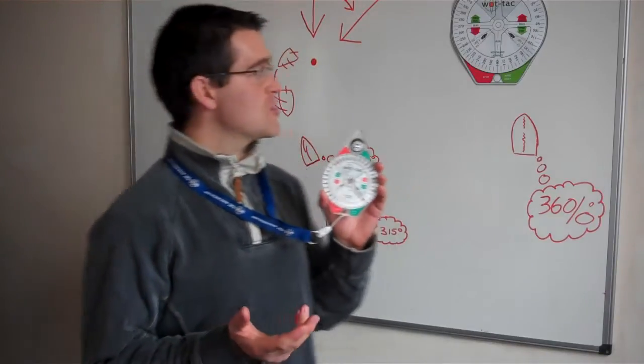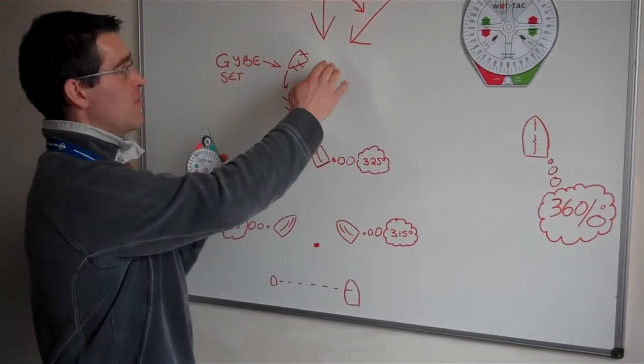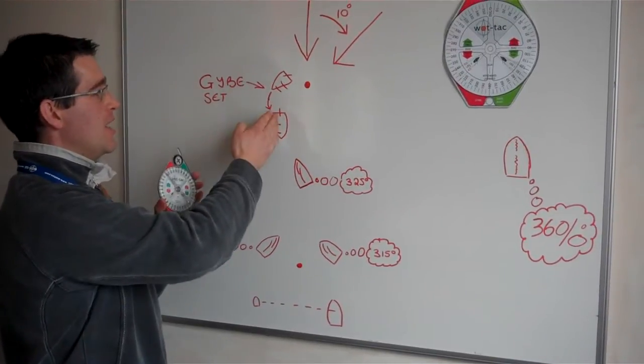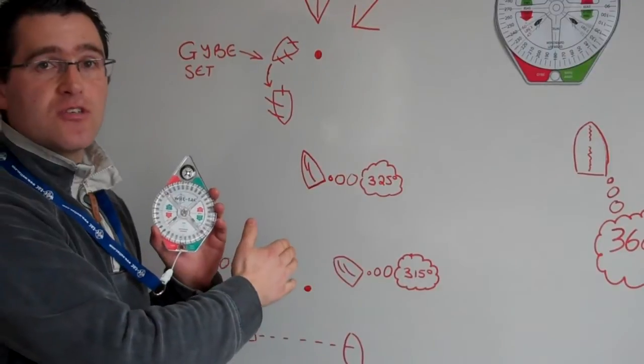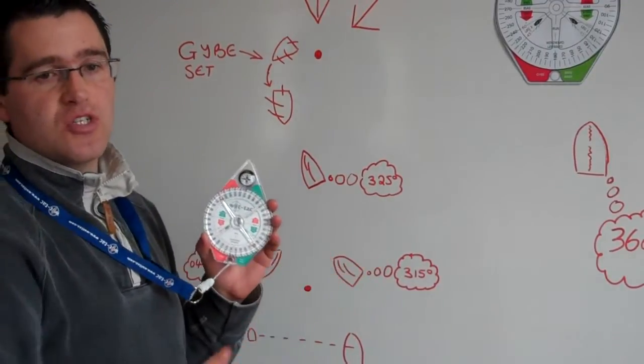We all know the importance of making that decision at the windward mark whether to bear away or jibe, because if we get it wrong we end up sailing extra distance which then we lose positions in that race.